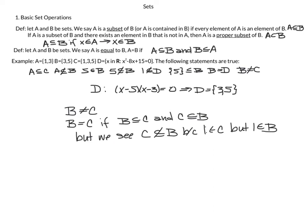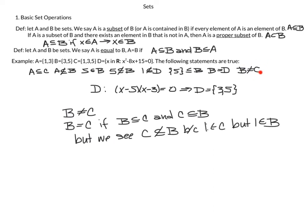Last statement: B is not equal to C. For B = C we would need B ⊆ C and C ⊆ B. But C is not a subset of B because element 1 is in C yet not in B. Since this condition fails, B cannot equal C. Again, you probably knew this intuitively, but you want to get used to using the formal definitions.